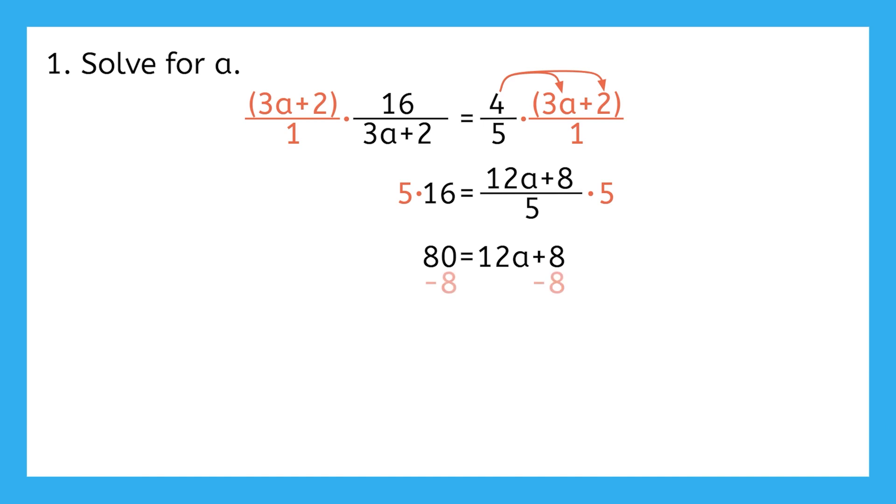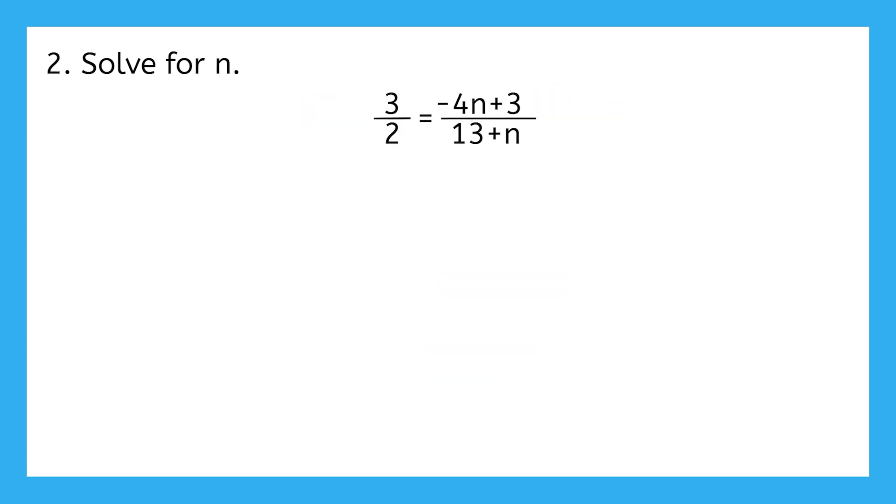We can use inverse operations to isolate a and get a solution of 6 for a. Let's do one more example together. In this example, we need to solve for n in the equation 3 over 2 equals negative 4n plus 3 over 13 plus n.